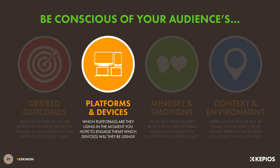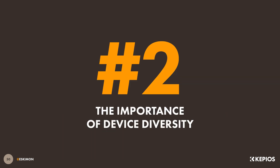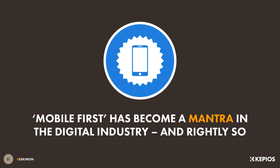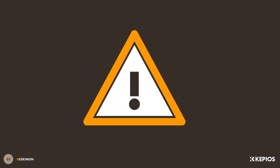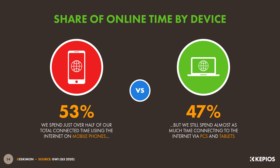And seeing as devices are such an important consideration in this mix, let's take a closer look at the importance of maintaining a balanced device strategy. As I'm sure you're all already aware, mobile first has become accepted wisdom in the digital industry, and quite rightly so. GWI's data shows that almost 53% of our internet time is now attributed to mobile, and data also shows that smartphones are our most frequently used connected devices. However, while we're using mobiles for 53% of our online time, a quick bit of arithmetic shows us that we're also spending nearly as much time using the internet on other devices like PCs and tablets.